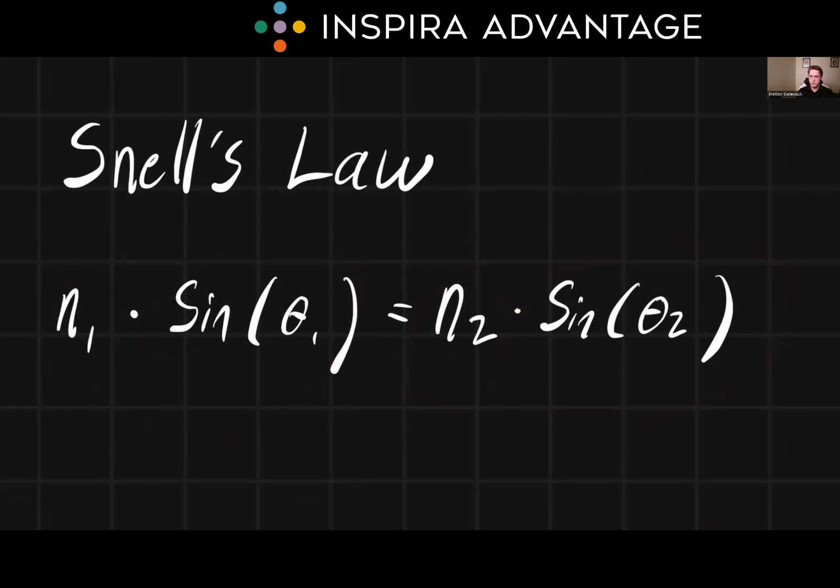Well, what are these symbols? N1 and N2 are the indices of refraction of the two materials that the light is passing through. The index of refraction is a value that describes how much the material bends light. The higher the index of refraction, the more light bends.